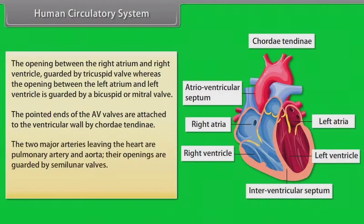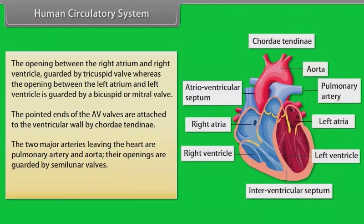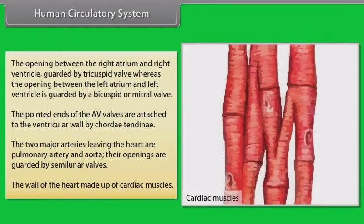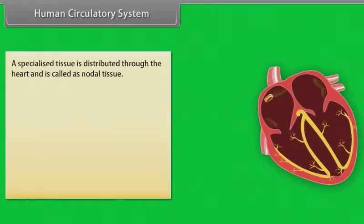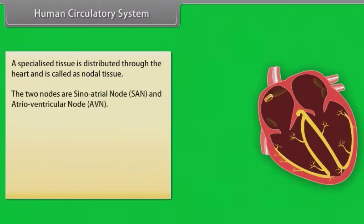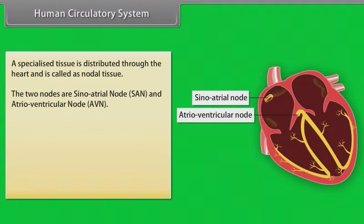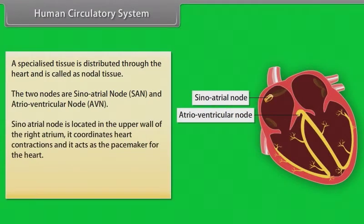The two major arteries leaving the heart are the pulmonary artery and the aorta, whose openings are guarded by semilunar valves. The heart wall is made of cardiac muscle. A specialized nodal tissue is distributed through the heart. The two nodes are the sino-atrial (SA) node and the atrio-ventricular (AV) node. The SA node, located in the upper wall of the right atrium, coordinates heart contractions and acts as the pacemaker.